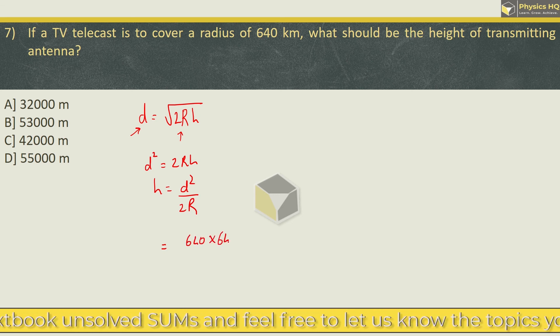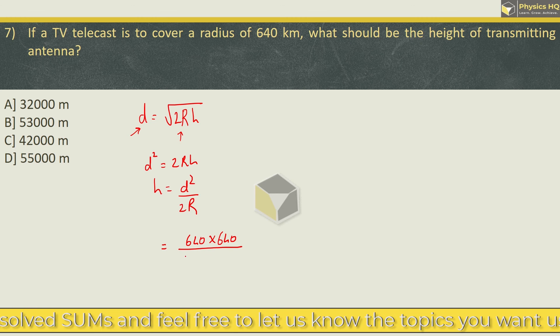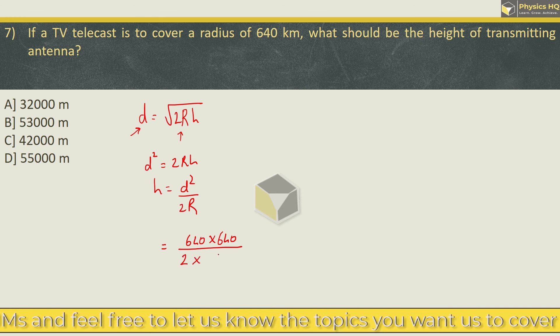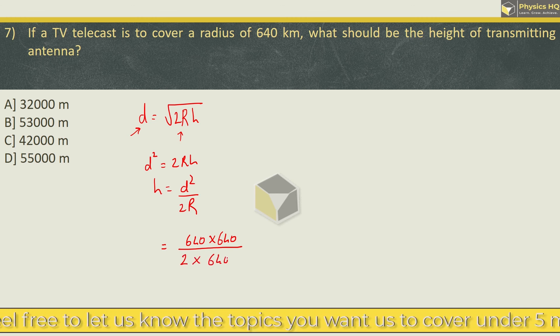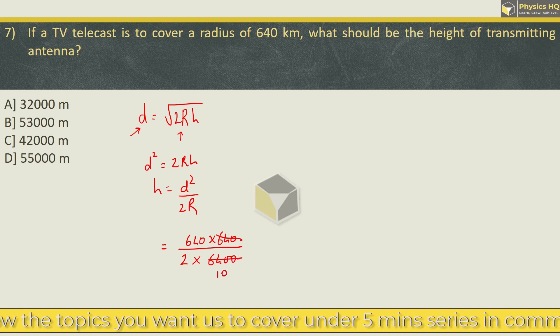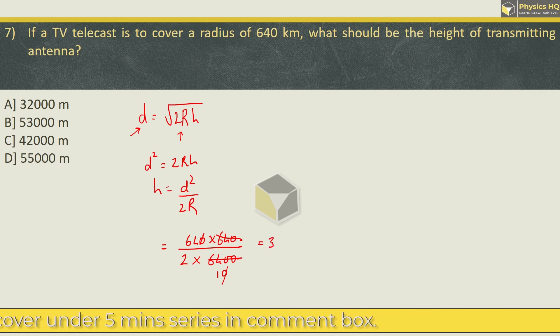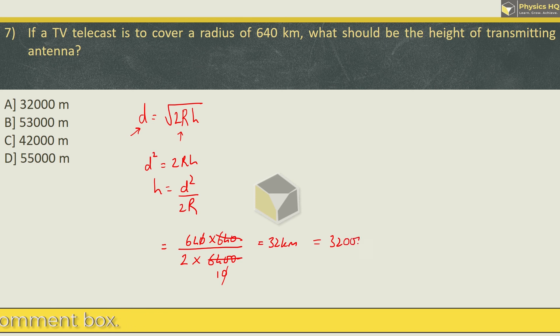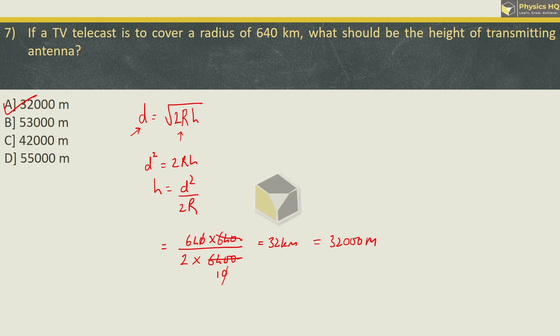Distance is given as 640 kilometers. We square it, so 640 × 640 divided by 2 × radius of earth is 6400 kilometers. Now if you cancel these, 10 will come, this 10 will cancel, 64 by 2 will be 32 kilometers. So the height is 32 kilometers, or you can write it as 32,000 meters. 1 kilometer is 1000 meters. So the correct option here is option A.